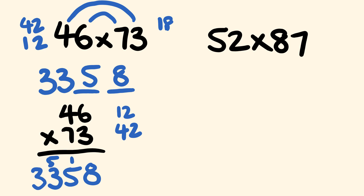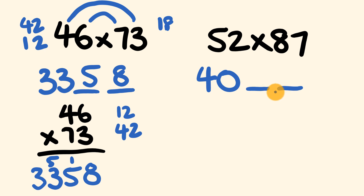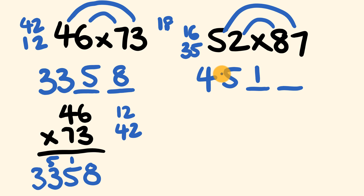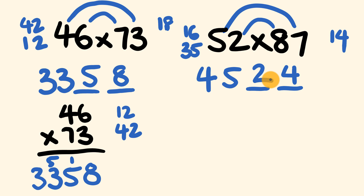Now let's look at 52 multiplied by 87 using rainbow multiplication. First, 5 times 8 equals 40, with two blank spots after. Rainbow for tens: 2 times 8 is 16, and 5 times 7 is 35 — adding gives 51, so 1 goes here and 40 becomes 45. Units: 2 times 7 is 14 — 4 goes down, carry 1 to make that 1 into a 2. Answer: 4524.